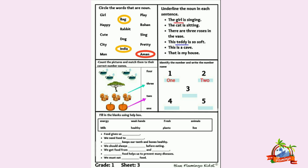The cat is sitting — billi baitti hai. Ismei noun kia hai? Cat. We will underline cat. This teddy is so soft — ye teddy bahut soft hai. Ismei noun kia hai? Teddy — teddy ek toy ka name hai, so we will underline teddy. Understood?